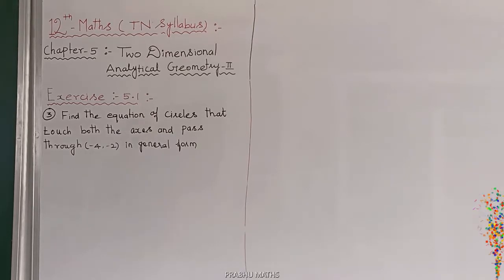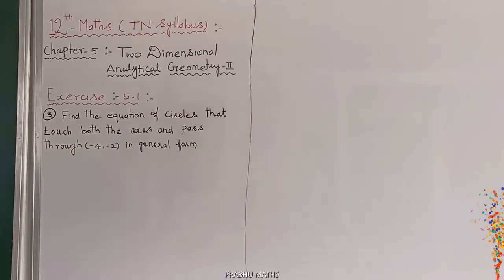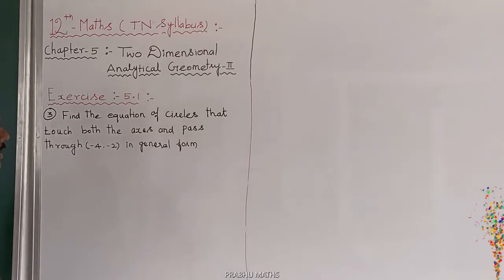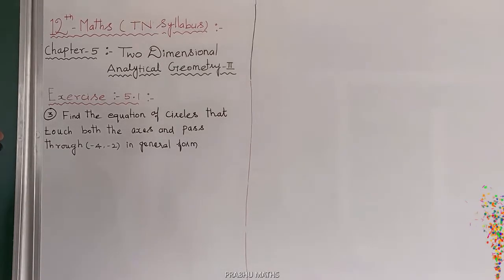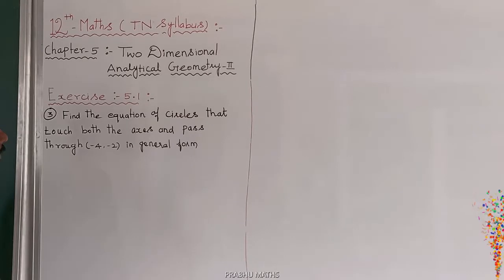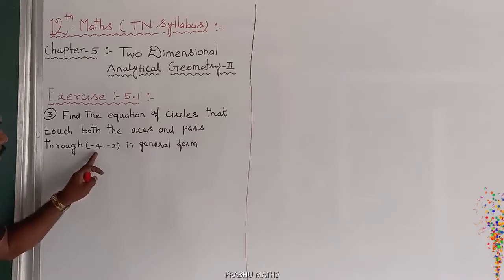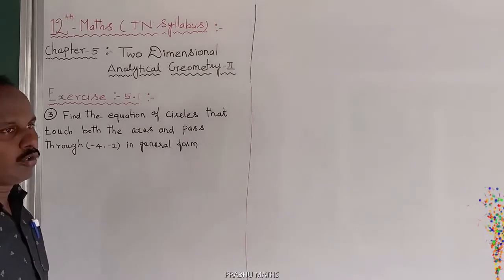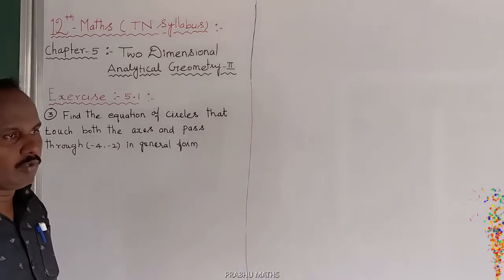Problem 5.1 third sum: Find the equation of a circle that touches both axes and passes through the point minus 4 comma minus 2. Find the general form.